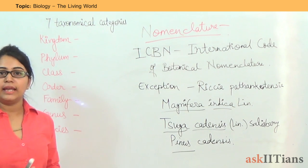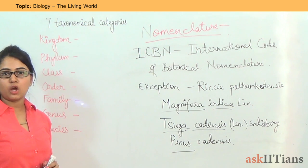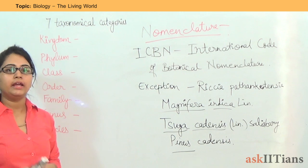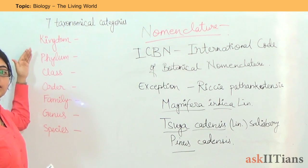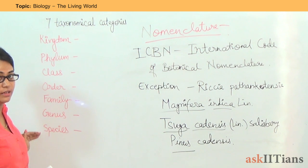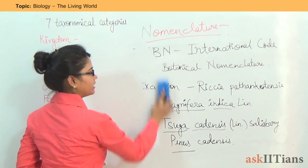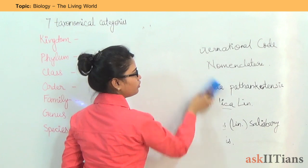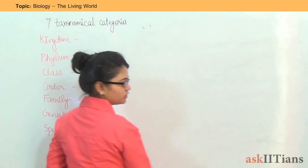Moving to the next section: the seven taxonomical categories. Seven taxonomical categories have been given in order to classify and describe an organism. These seven categories are kingdom, phylum, class, order, family, genus, and species. Let's take an example. I should first take the example of a human being — it's good to know about ourselves.